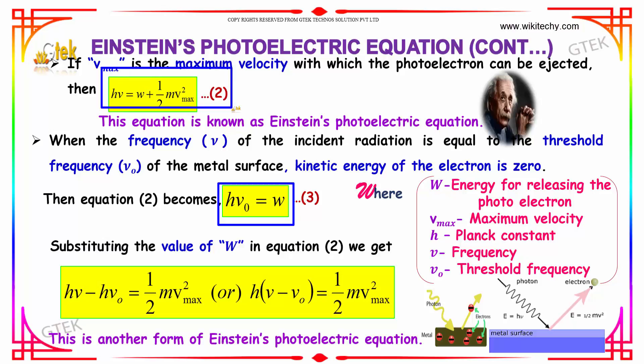Substituting this one in this equation, you will be getting h nu minus h nu nought because W is replaced with h nu nought. Moving here, you get minus half mv square max or h into nu minus nu nought is equal to half mv square max. This is another form of Einstein's photoelectric equation.